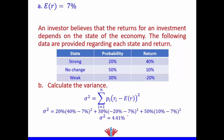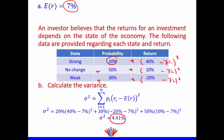The second part is to calculate the variance. The formula is the summation of each probability multiplied by (return minus the expected return) squared. So: 20% × (40% − 7%)² + 50% × (10% − 7%)² + 30% × (−20% − 7%)². This gives a variance, or sigma squared, of 4.41%.